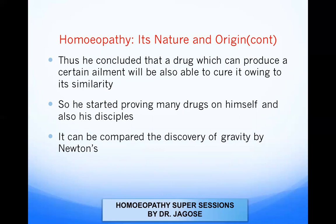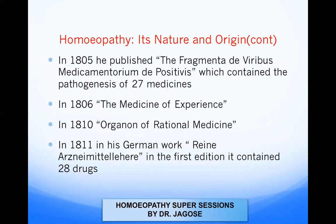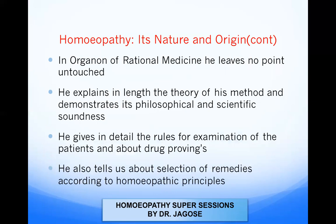He started proving many drugs on himself and also on his disciples, and this can be compared to the discovery of gravity by Newton. In 1805, he published the Fragmenta de Viribus Medicamentorum Positivis, which contained the pathogenesis of 27 medicines. In 1806, the Medicine of Experience. In 1810, the Organon of Rational Medicine. And in 1811, in his German work Reine Arzneimittellehre, the fourth edition contained around 28 drugs. In the Organon of Rational Medicine, he leaves no point untouched — he expounds at length the theory of his method and demonstrates its philosophical and scientific soundness.